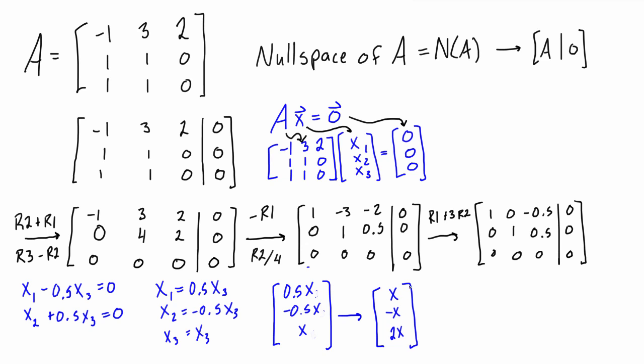So basically this vector here is the null space of A. This is the set of all vectors with this form that are the solution to this homogeneous problem. So we can come up here and write this is equal to x, negative x, and 2x.